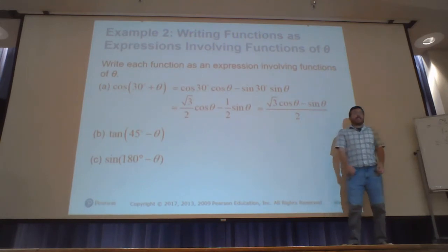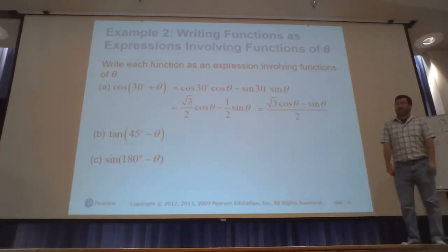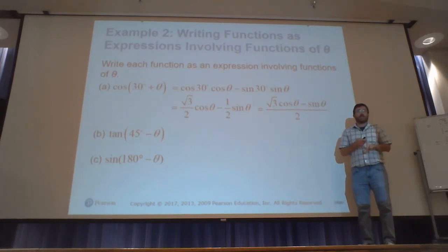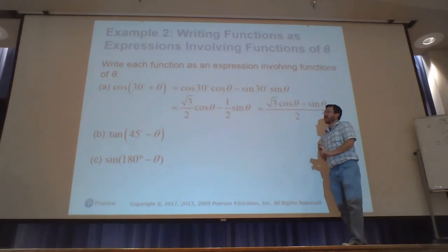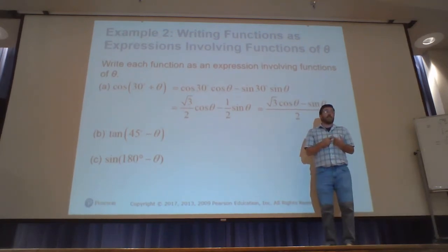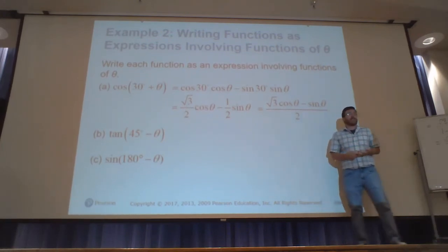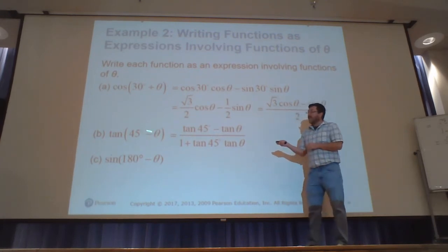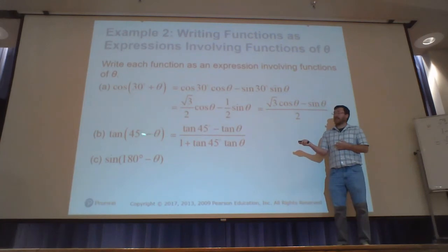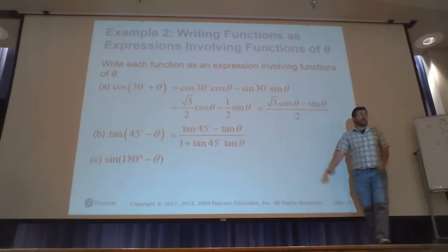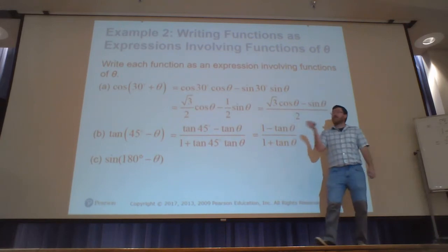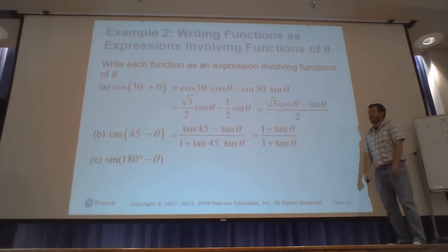For tangent of (45° − θ), use the tangent difference identity: (tangent 45° minus tangent θ) over (1 plus tangent 45° times tangent θ). The sign on top matches the subtraction; the sign on bottom is opposite. Since tangent 45° = 1, this simplifies to (1 − tangent θ) over (1 + tangent θ).